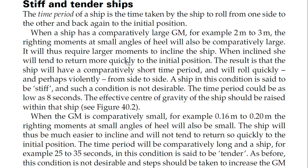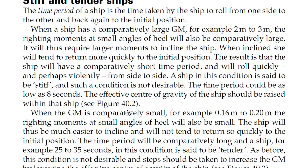When GM is comparatively small — for example 0.16 to 0.20 meters, compared to the 2 to 3 meters in a stiff ship — the righting moment at a small angle of heel will be small. The ship will thus be much easier to incline, and will not tend to return so quickly once inclined — it will stay in that inclined position. The time period will be comparatively long, around 25 to 35 seconds.